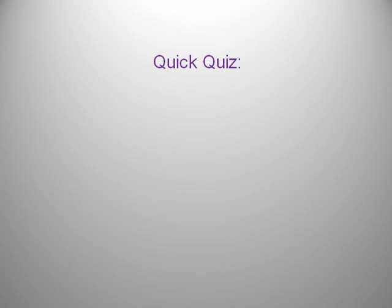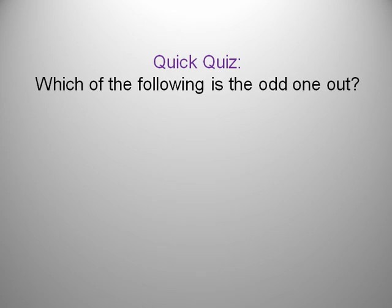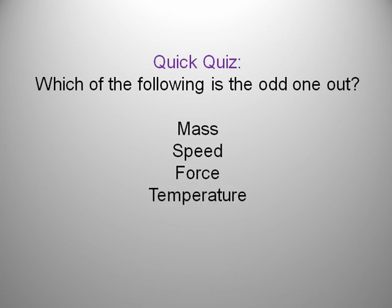So here's a quick quiz. Which of the following is the odd one out? Mass, speed, force, temperature, distance, or elephant? So go ahead and take your guess. The odd one out is elephant of course, right? The answer is elephant. No, wait a minute, it's force. Why?